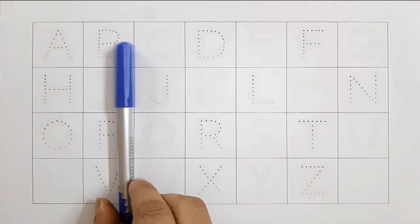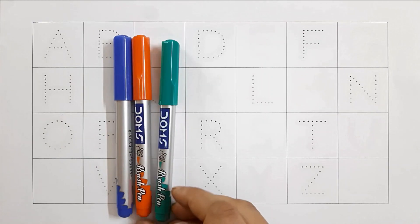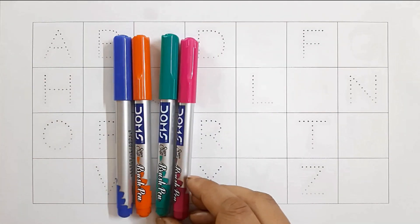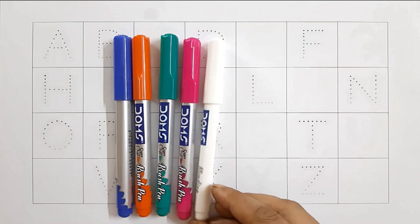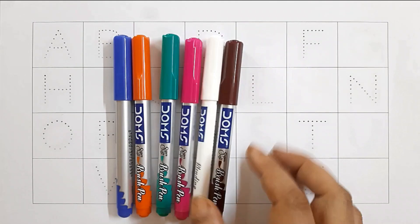Colour name: blue colour, orange colour, sea green colour, purple colour, white colour, brown colour.